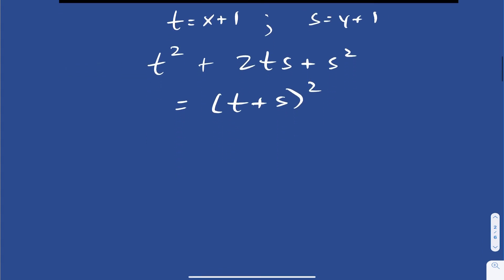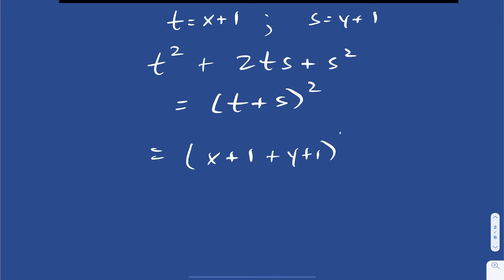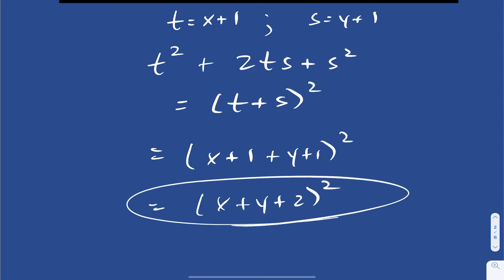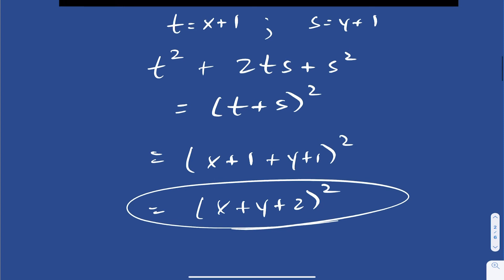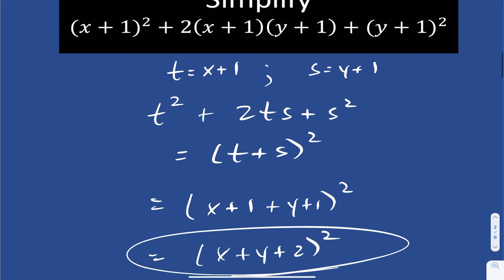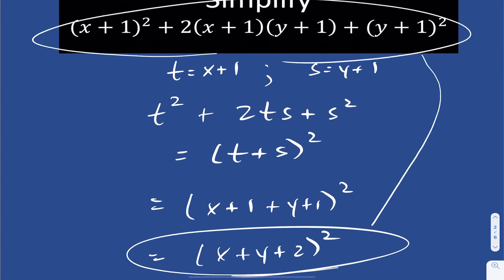Well, what exactly is t? t is x plus 1, and s is y plus 1. Collecting like terms, you get the quantity x plus y plus 2, squared. So this expression is equivalent to that — by recognizing the symmetry and the perfect square trinomial form and factoring accordingly.